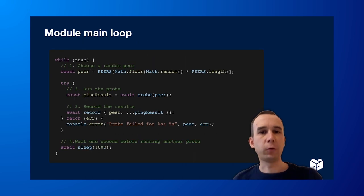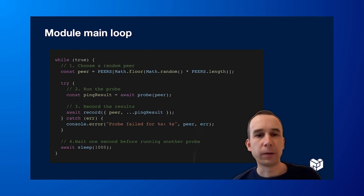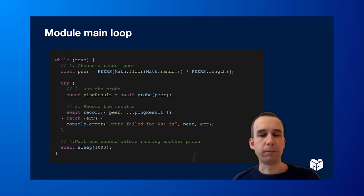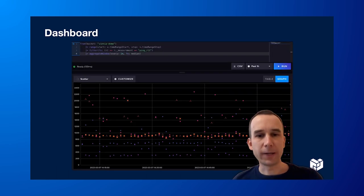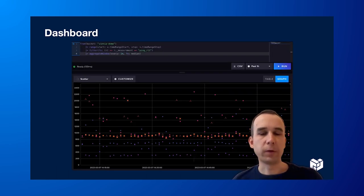Then we put this all together in a loop which chooses a random peer, measures the ping latency, and records the data into InfluxDB. Using this data we can visualize what's going on with our network — you can use InfluxDB dashboards or you can pull the data into Grafana.